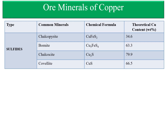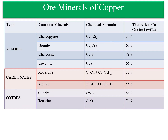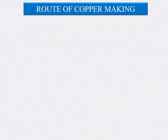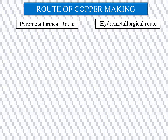Copper also occurs in oxidized minerals such as carbonates and oxides, and some ore minerals are found in the form of sulfates. After understanding the basic properties and mineralogical characteristics of copper ore, we will now understand the concept behind copper production from its natural ore. There are two routes of copper making: the first is the pyrometallurgical route and the second is the hydrometallurgical route.